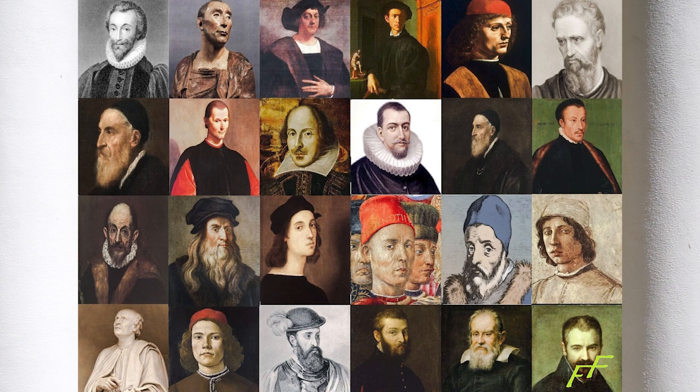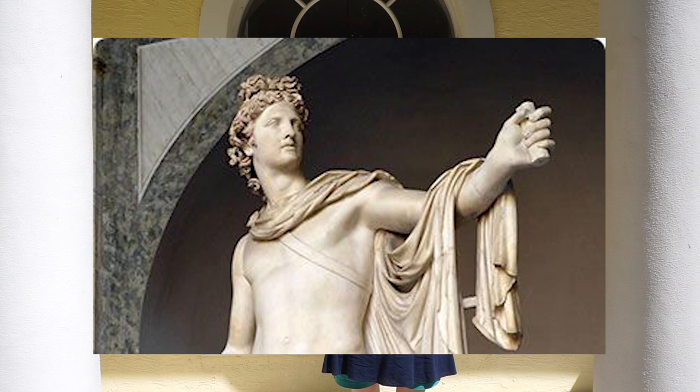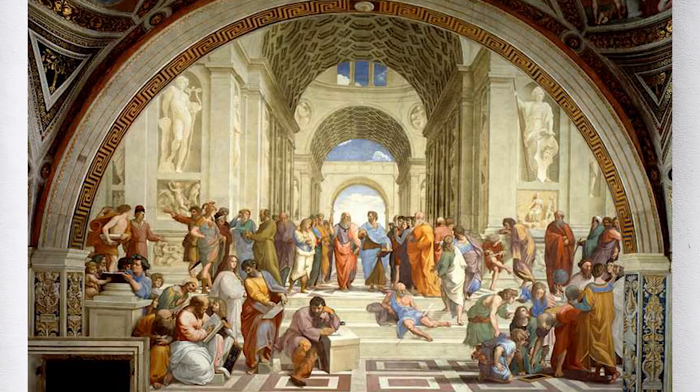During the Renaissance, which means rebirth, artists, philosophers, and scientists tried to rediscover knowledge from the Greek classical period. They also came up with a lot of new ideas for making art. Paintings became a lot more natural and realistic, and they invented something called perspective.